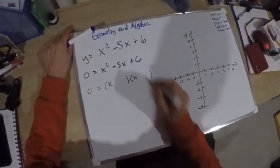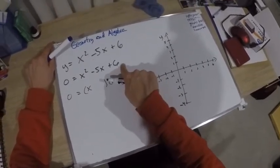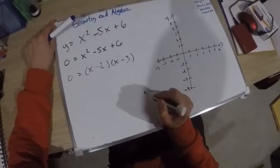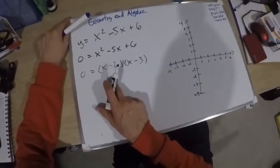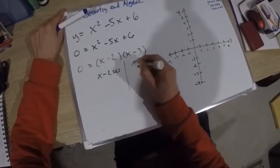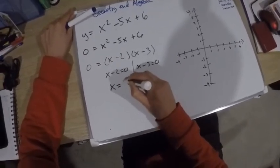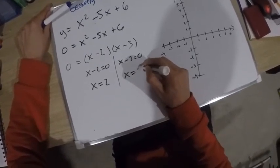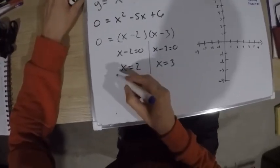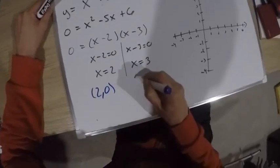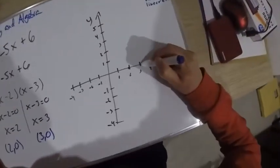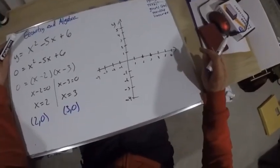Negative 2 times negative 3 is positive 6, and negative 2 plus negative 3 is negative 5. So we get two factors: (x − 2) = 0 or (x − 3) = 0, meaning x = 2 or x = 3. Those give us coordinates (2, 0) and (3, 0) — two points on the graph where the curve crosses the x-axis.